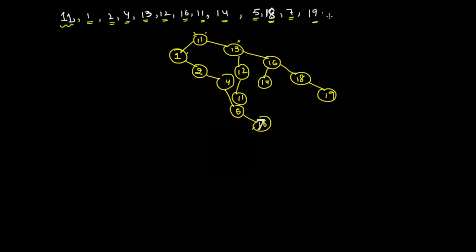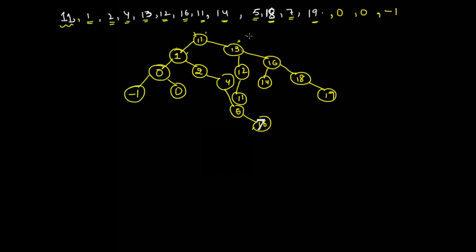Now assume we have one more data which is 0. This 0 is less than 11 and less than 1, so it comes to the left of 1. If the next data is also 0, it is less than 11, less than 1, but equal to the existing 0, so it comes to the right of that 0. If the next data is -1, it is less than 11, less than 1, less than 0, so it comes to the left of 0. This is how you create a binary search tree.